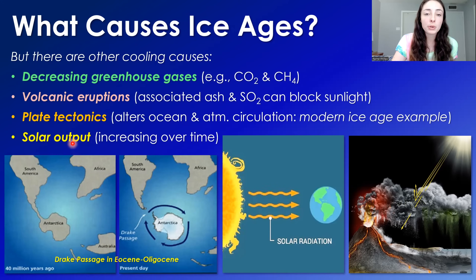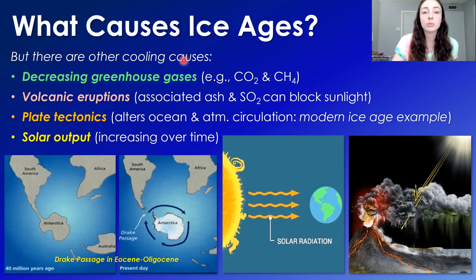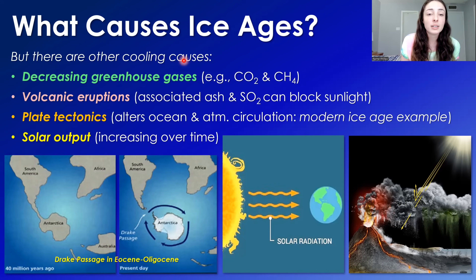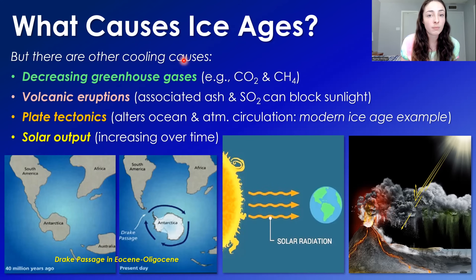Solar output is another major factor that can cause cooling. The sun's intensity has actually increased through Earth's history ever since the solar system formed, meaning solar output itself has changed over time.